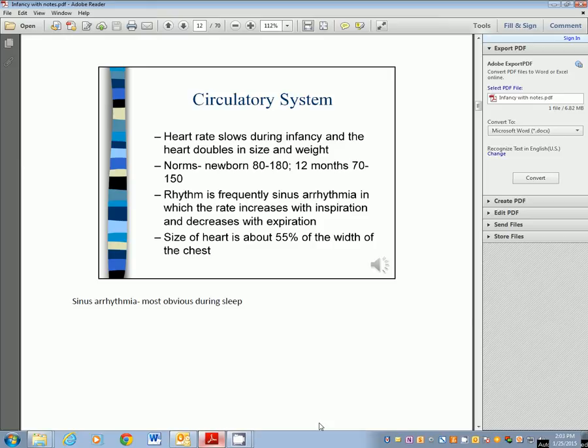The circulatory system. Heart rate is slowing down during infancy because the heart size is doubling in size and weight. Newborns, about 80 to 180, average 140. At twelve months, anywhere from 70 to 150. A rhythm is frequently what we call sinus arrhythmia, where the rate increases with inspiration and decreases with expiration. This is most obvious during sleep. For the new novice nurse, they go in to check their heart rate and it's speeding up, slowing down, speeding up and slowing down. That's just normal and it's called sinus arrhythmia. The size of the heart is about 55% the width of the chest at this time.